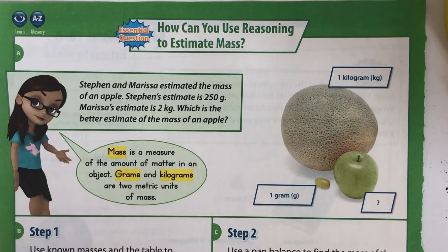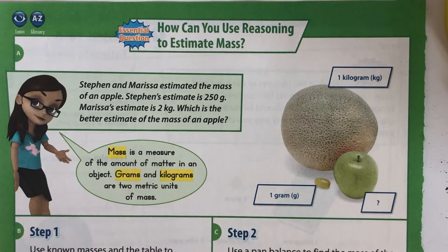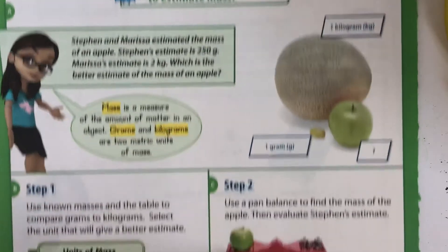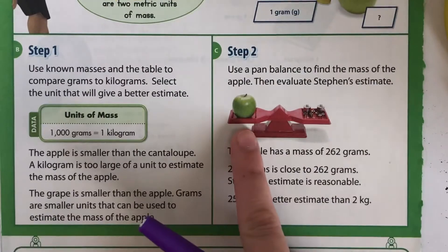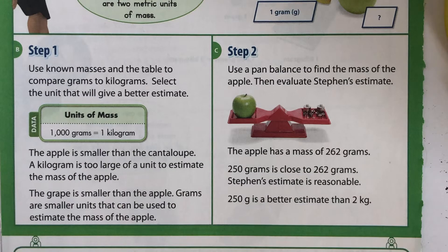Mass is a measure of the amount of matter in an object. Grams and kilograms are two metric units of mass. Use the known masses in the table to compare grams to kilograms, then select a unit that will give a better estimate.